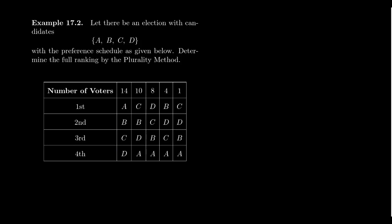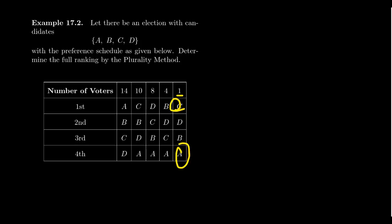Then 10 people voted candidate C as the top choice, then B, then D, then A. Eight people voted for D, then C, then B, then A. Four people voted for B, then D, then C, then A. And then one person voted C, D, B, A. So C was their first choice and A was their last choice. That's how you want to interpret this preference schedule.